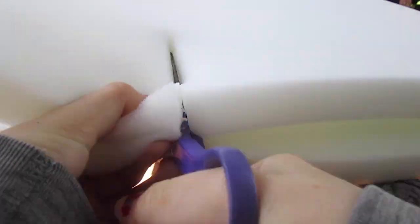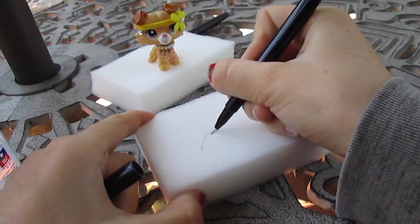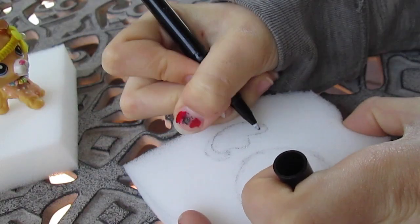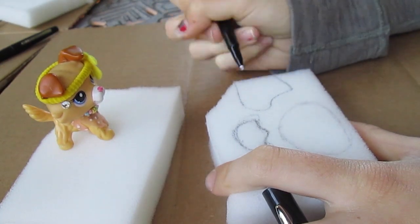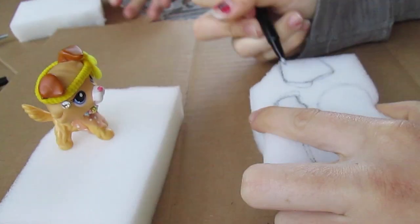So first you're going to cut out a piece of foam that's as big as you want your squishy to be. I want her mouth, her ears, and her nose to be more 3D. So I'm going to draw them out on a separate piece of foam so that they can be thicker and more 3D.